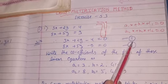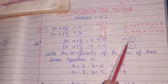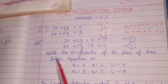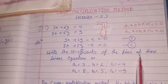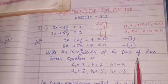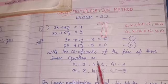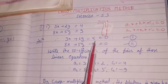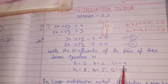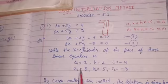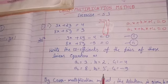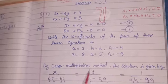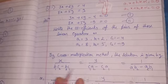There is no requirement to write equation numbers since we won't use them. Now we write the coefficients: a1 = 3, b1 = 2, c1 = -4, a2 = 8, b2 = 5, c2 = -9. By the cross multiplication method, the solution is given by the standard formula.